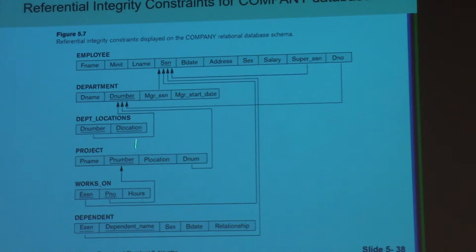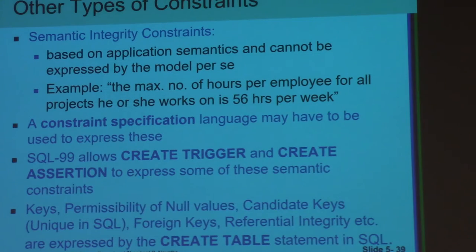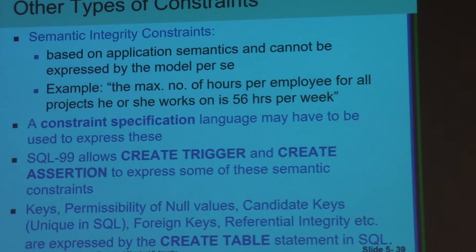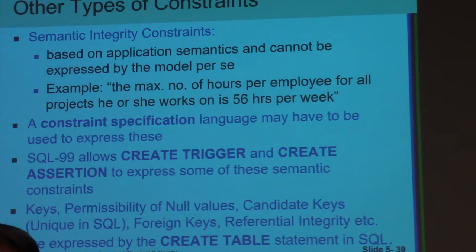This is the relational schema diagram — that is our design goal. These three are the main constraints. Are there any other constraints? For example, in a company, an employee's salary will not be higher than their manager's. That is a company rule — a domain-specific user constraint. Is there a way to implement such a constraint?